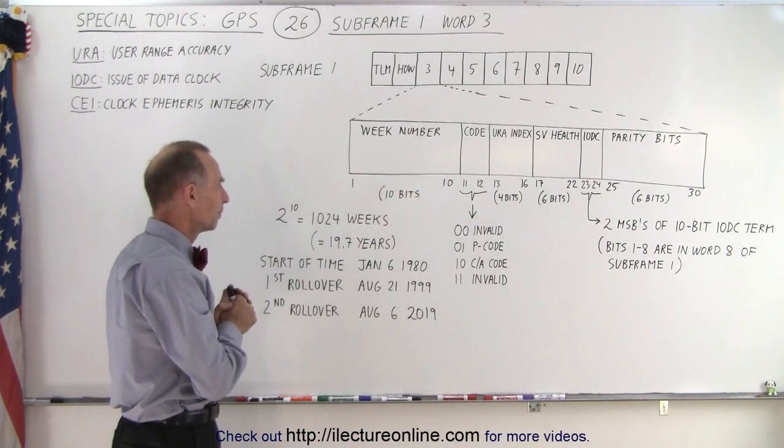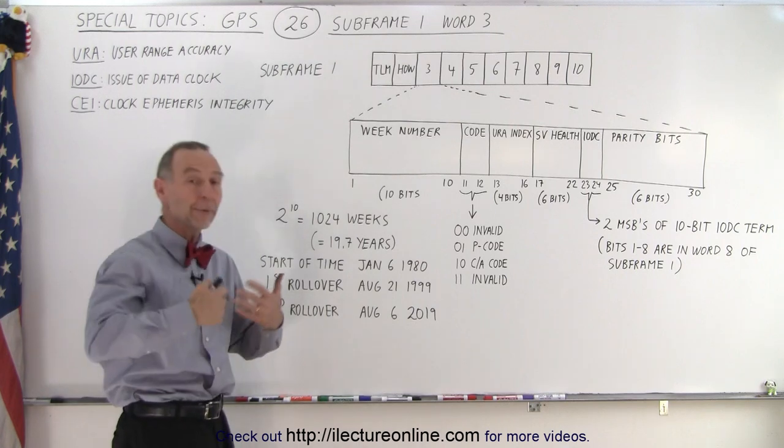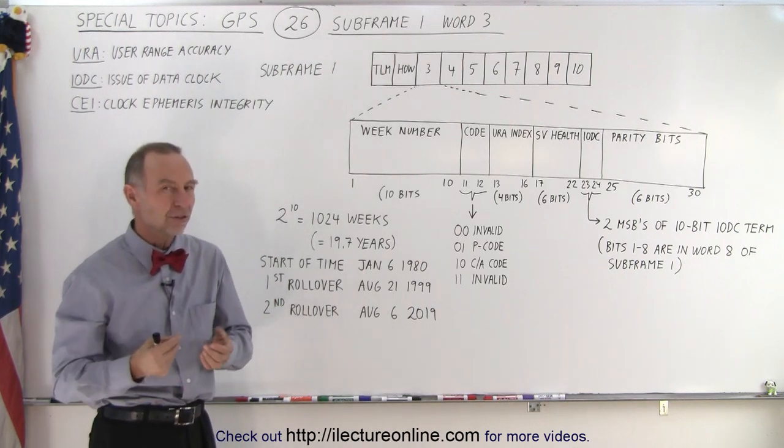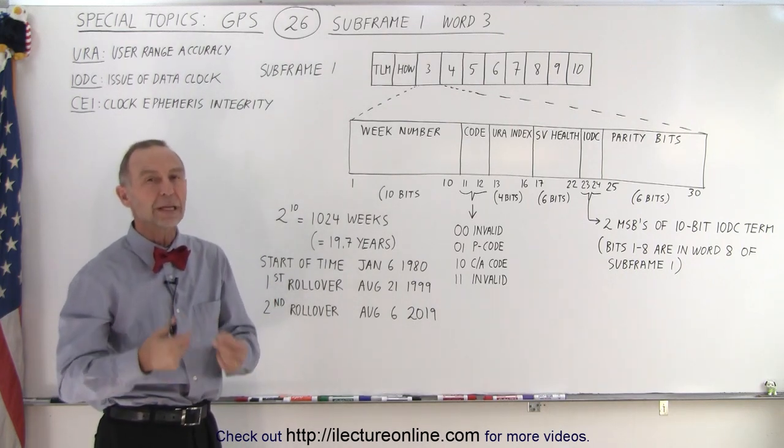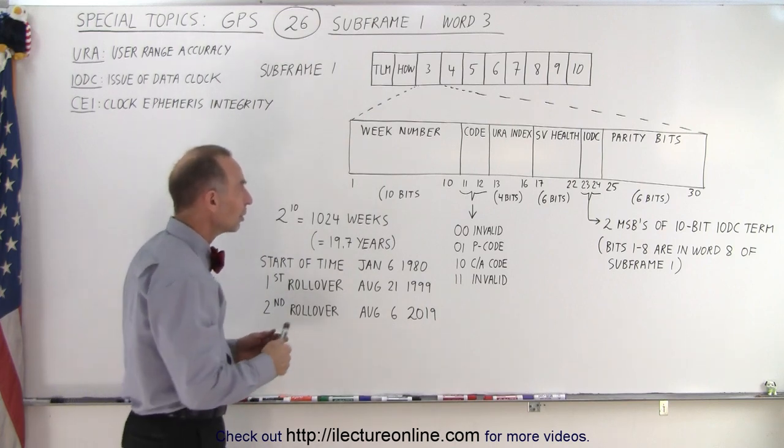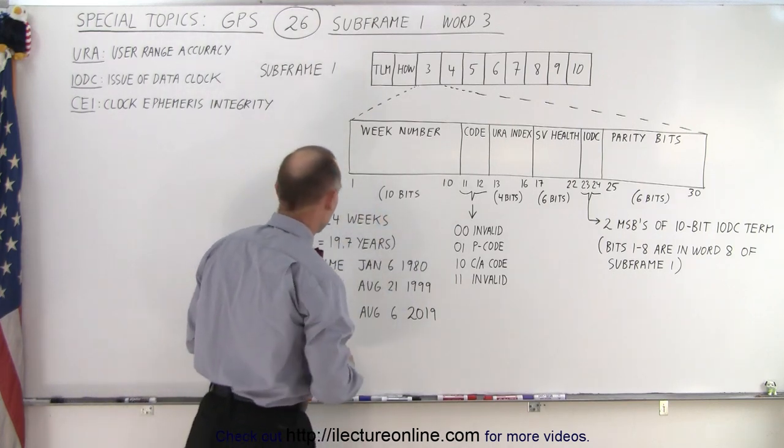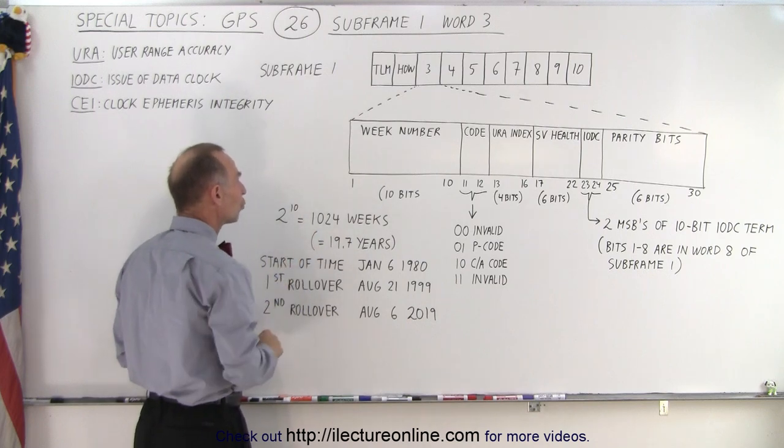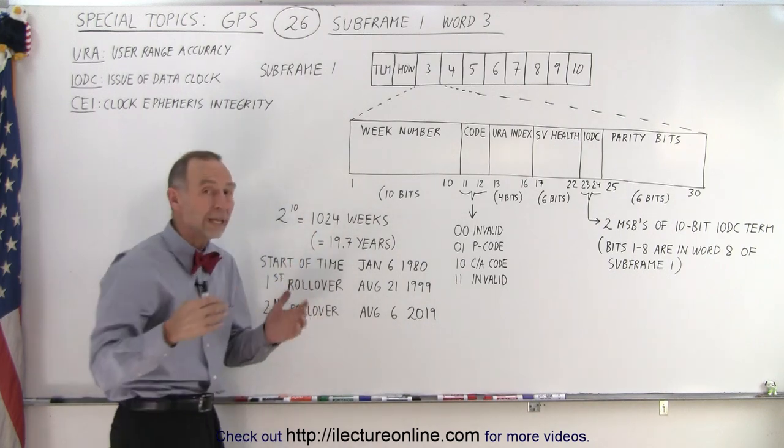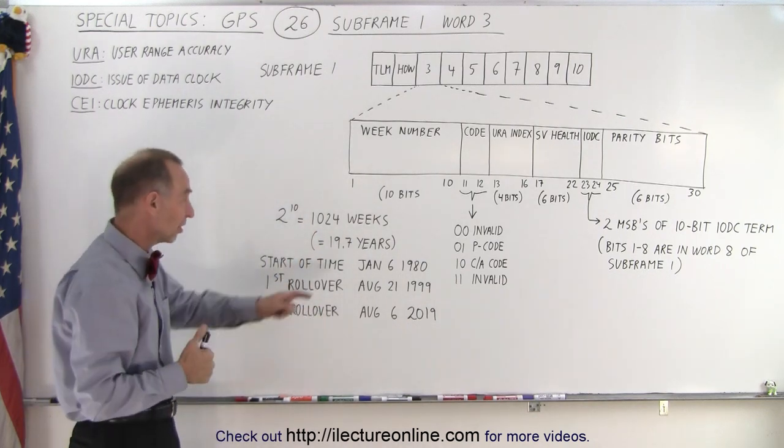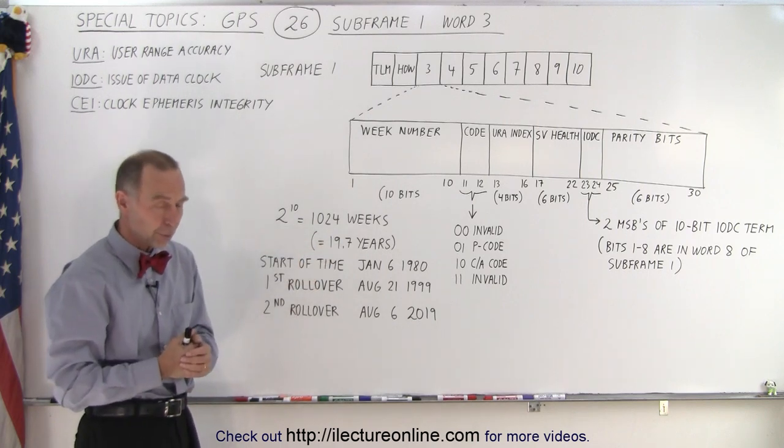Starting with the week number, we need to know where we are on the calendar and GPS does that by keeping track of the number of weeks that have elapsed. There's only room for 10 bits and if we take 2 to the 10th power that's 1024 total weeks we can record, which is a little bit less than 20 years worth of weeks.